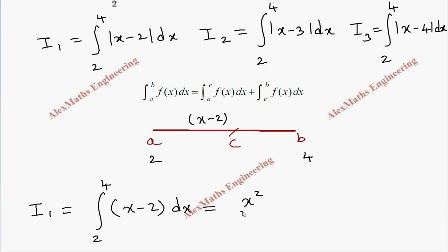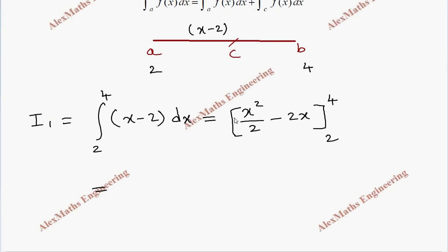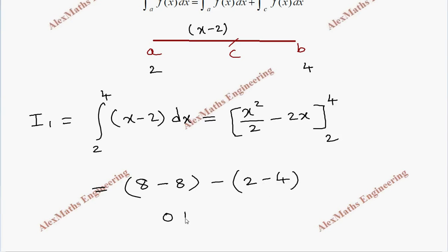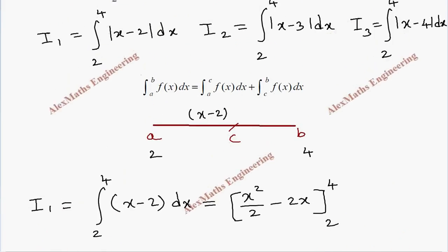Integrating gives x squared by 2 minus 2x, evaluated from 2 to 4. Substituting the upper limit 4: 16 by 2 is 8, minus 2 times 4 is 8, giving 0. Substituting the lower limit 2: 4 by 2 is 2, minus 4 is minus 2. So I1 equals 0 minus (minus 2), which gives I1 equals 2.